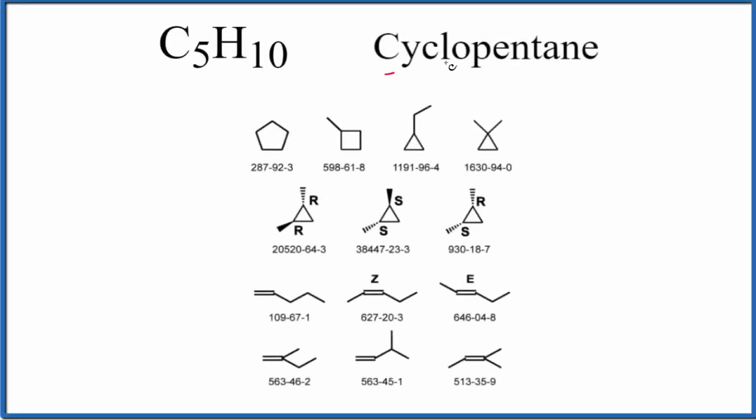I was asked to draw the Lewis structure for cyclopentane. It has the formula C5H10, but if you're just given C5H10, you can actually draw this in a number of ways. There are a number of isomers, 13 to be exact.